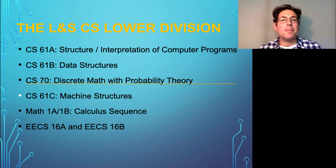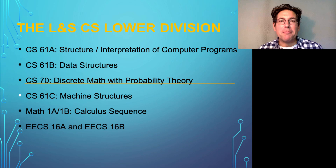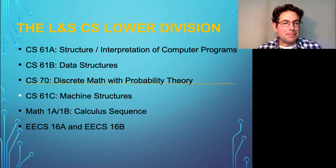CS70 is a discrete math and probability theory course—the two branches of mathematics most relevant to computing. You don't have to take it after 61A and 61B, but you should take some mathematics courses beforehand. The prerequisite for CS70 is sophomore-level mathematical maturity, which means you should be taking some math in your freshman year and then take 70 in your sophomore year. Some students take it at the end of their freshman year if they already have a strong math background.